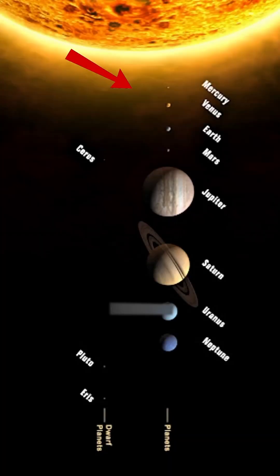These were Mercury, Venus, Earth, Mars, Jupiter, Saturn, Uranus, Neptune, Pluto, and Eris.